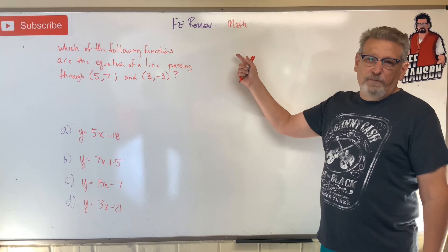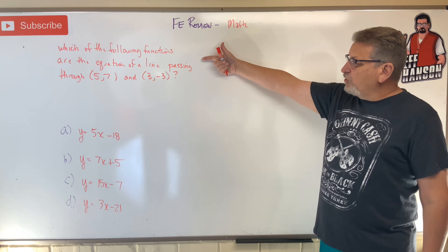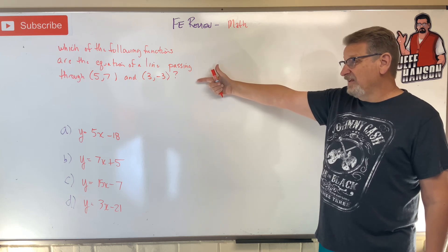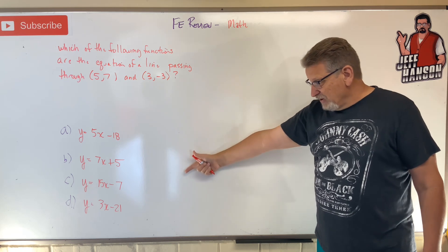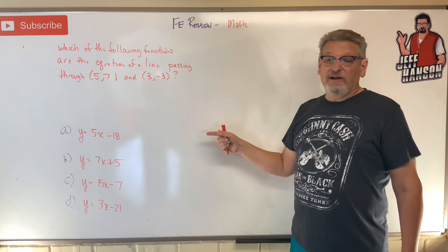Hey gang, welcome back. FE review on math. Which of the following functions are the equation of a line passing through the points (5,7) and (3,-3)? There's the possible functions down there.